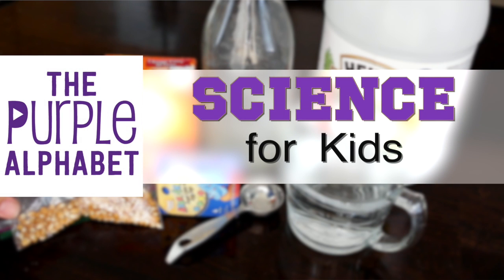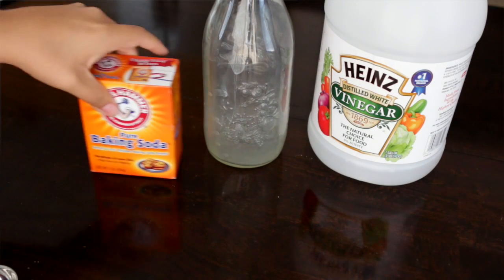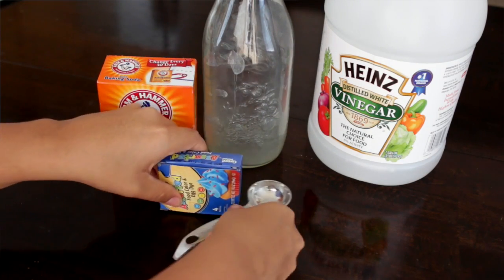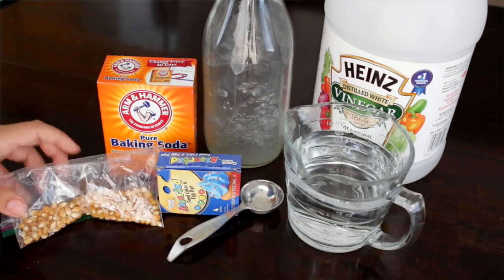Hey you guys, it's Christina from The Purple Alphabet. I stumbled on Pinterest across this little experiment from One Time Through, and what was great about this is that it only took a couple of cupboard items in my kitchen to make it.